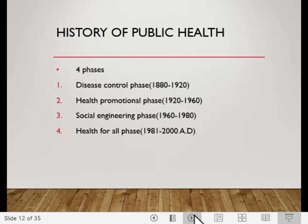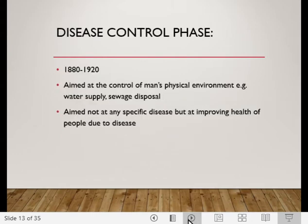There are four phases of public health. This can be asked in a full question, and a short note is asked about the social engineering phase. The first phase is the disease control phase, from 1880 to 1920. This was aimed at the control of man's physical environment — most diseases at that time were due to the quality of water and disposal of waste. Examples are water supply and sewage disposal. Improving these changes the environment for the better and disease decreases. It was aimed not at any specific disease but at improving the health of people.